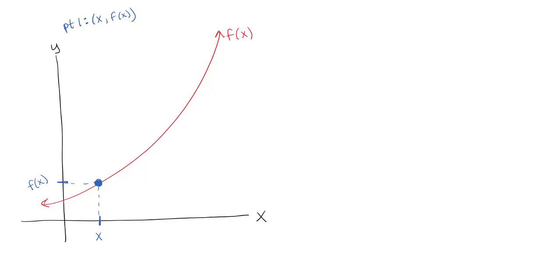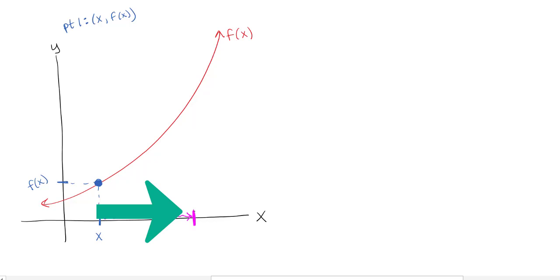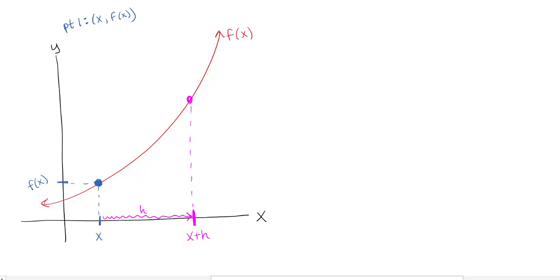Then let's say we have some second point, where I'm going to move over some horizontal distance. I have a new x value, and I'm going to call that horizontal distance h for horizontal shift. So I'm adding h onto x, so that new x value would be x plus h, and that corresponding point would be about right here. That y value would be f of x plus h.